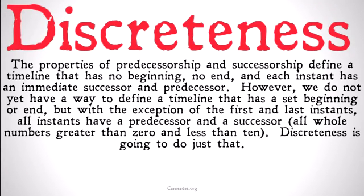The properties of predecessorship and successorship define a timeline that has no beginning, no end, and each instant has an immediate successor and predecessor. A dense timeline defines a timeline such that no instant has an immediate predecessor or successor, because between any two instants there's another instant.